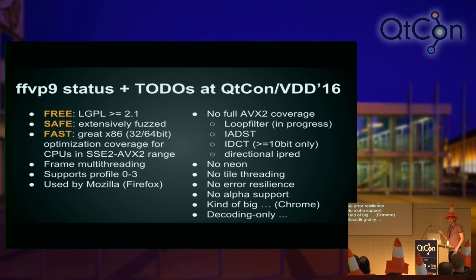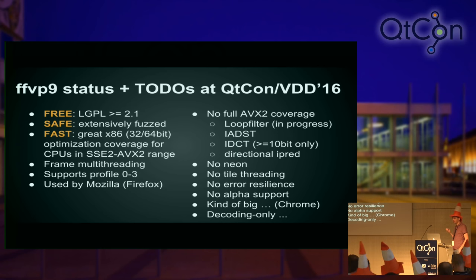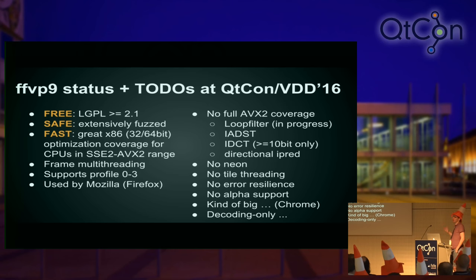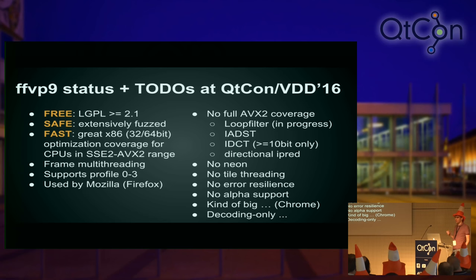Sadly, Chrome doesn't want to use FFP9. The reason I've been given is that it's too big — though the decoder is not any bigger than others of its sort, about a megabyte in total. The HEVC decoder is a megabyte, the libvpx decoder is a megabyte. What we're caught in is cross-currents where they're trying to reduce the obesity of Chrome overall, so there's currently no space for FFP9 in Chrome. I'm hoping that will change, or that I'll be able to make it smaller.